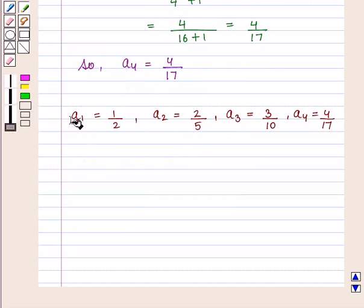Thus, we have found out a_1 is equal to 1 by 2, a_2 is equal to 2 by 5, a_3 is equal to 3 by 10, a_4 is equal to 4 by 17. Similarly, we can calculate a_5, a_6 and so on.